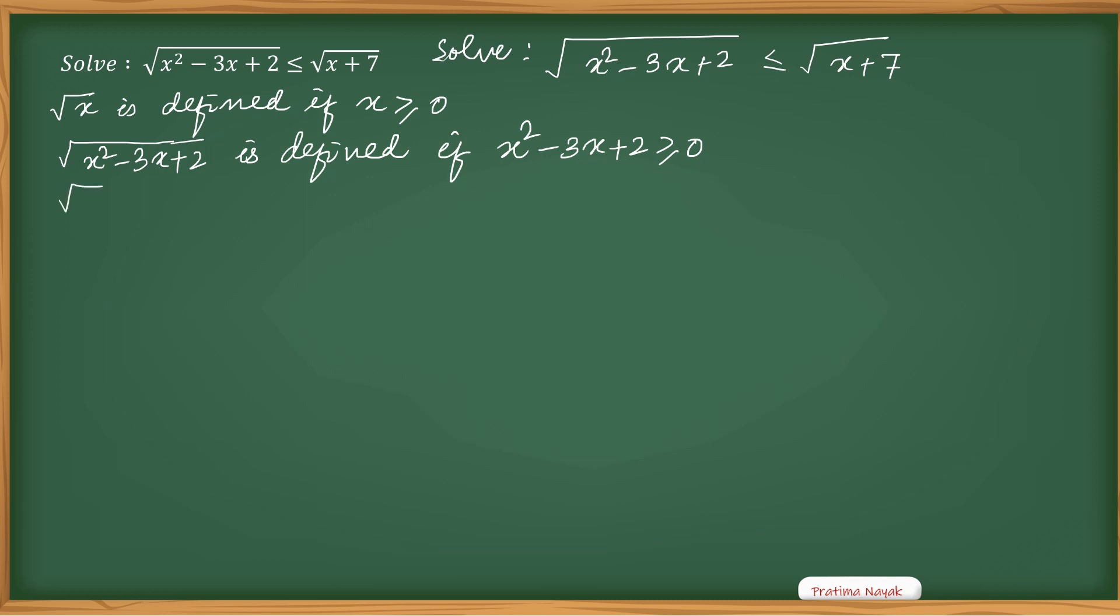Similarly, √(x+7) is defined if x+7 is greater than or equal to 0.